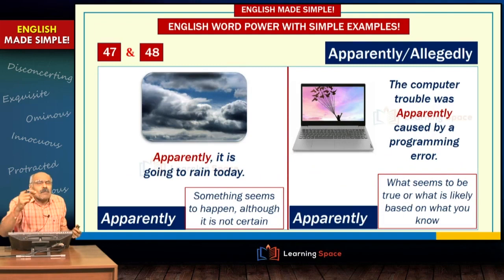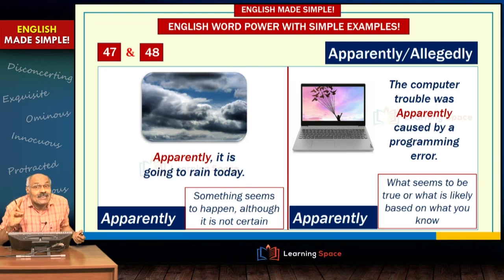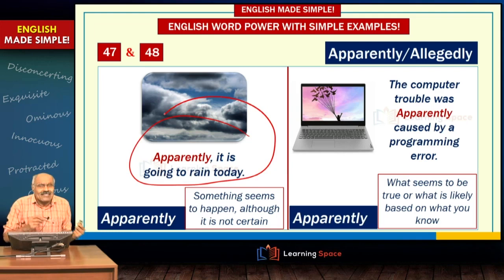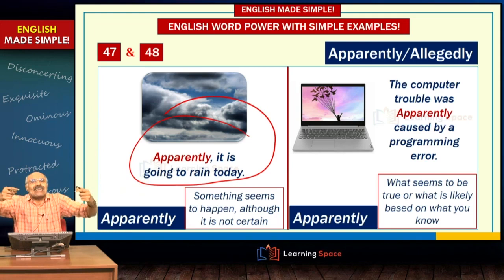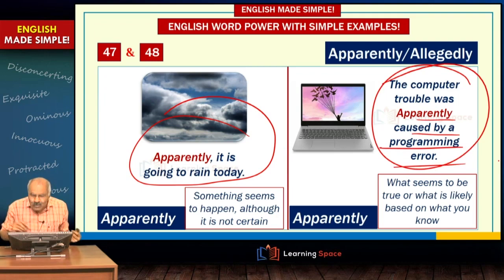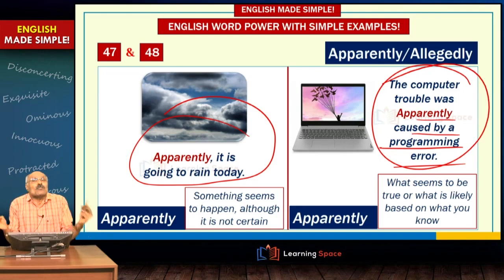Next are 'apparently' and 'allegedly' — two words found frequently in newspapers. 'Apparently' has two important meanings. First: it seems something may happen — for example, apparently it is going to rain today. There are so many clouds so it seems likely to rain, but it may not ultimately happen. Another example: the computer trouble was apparently caused by a programming error — you are not 100% certain but you believe it to be true.